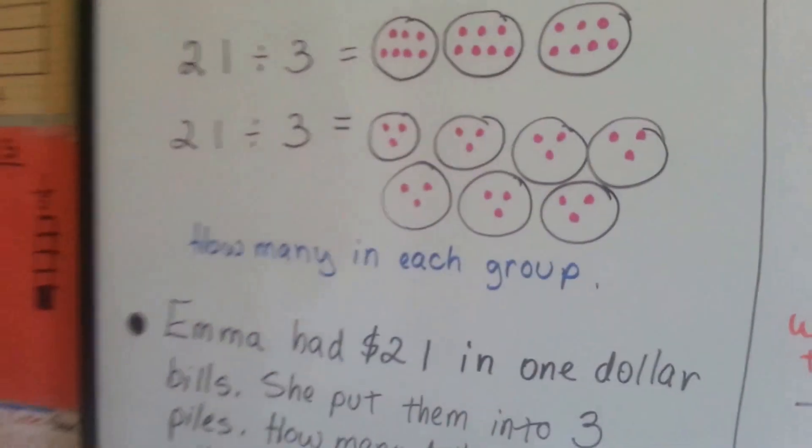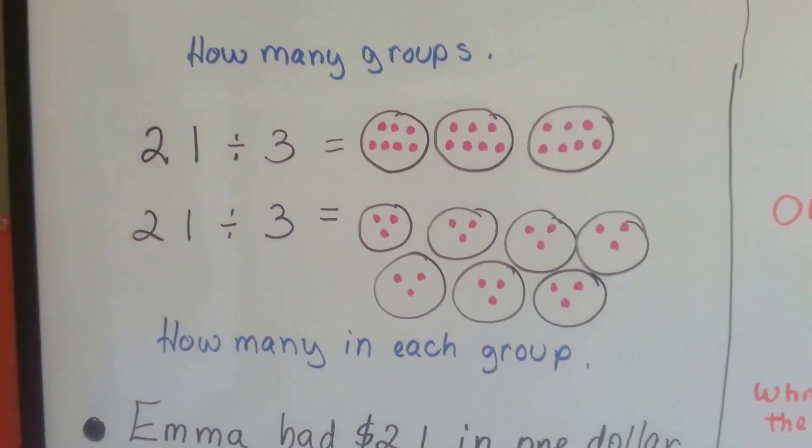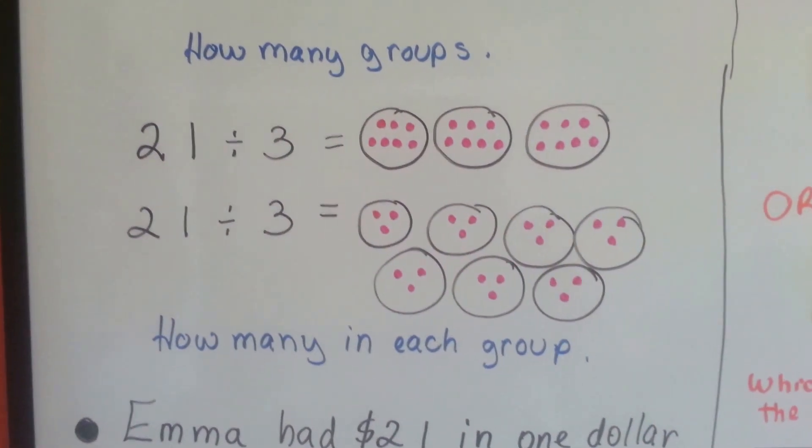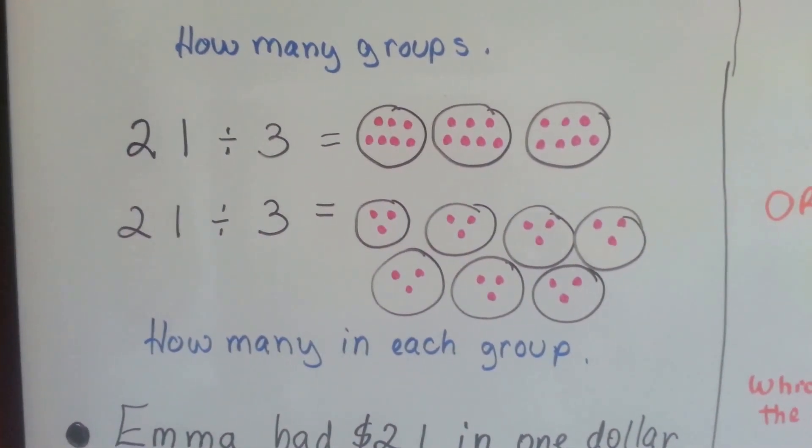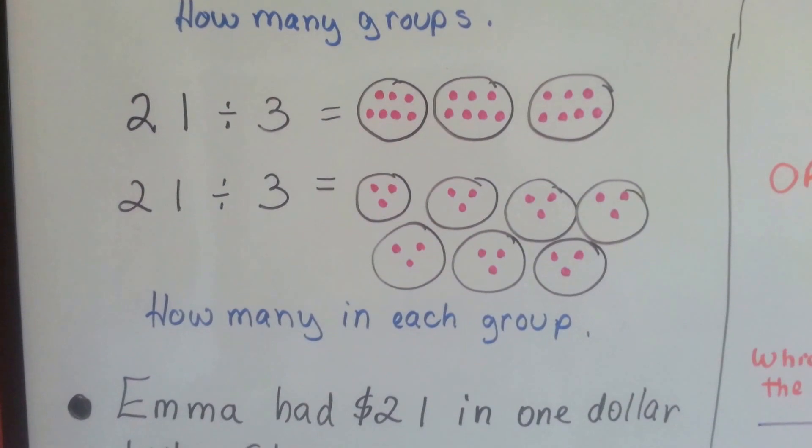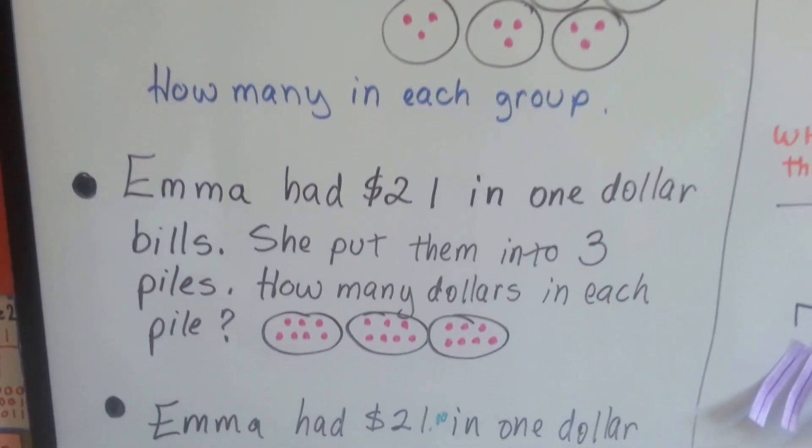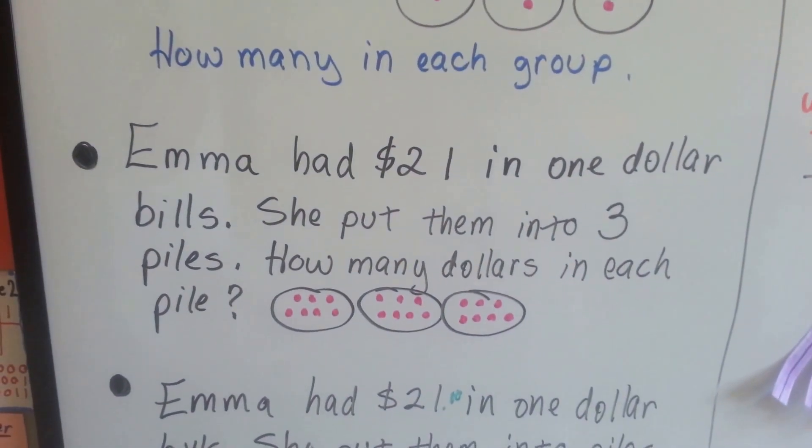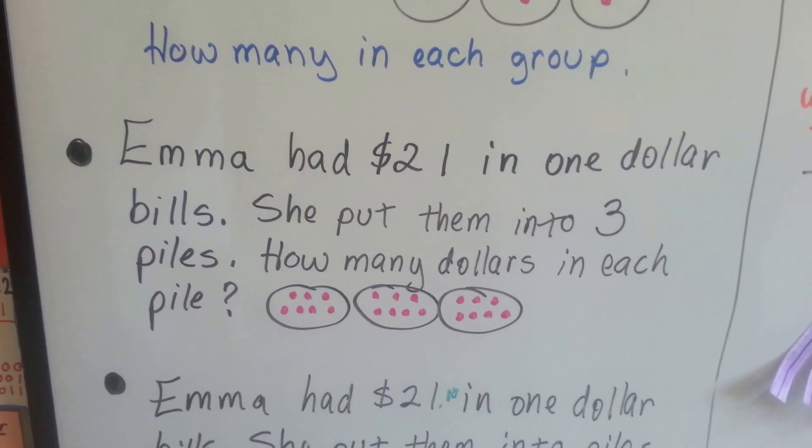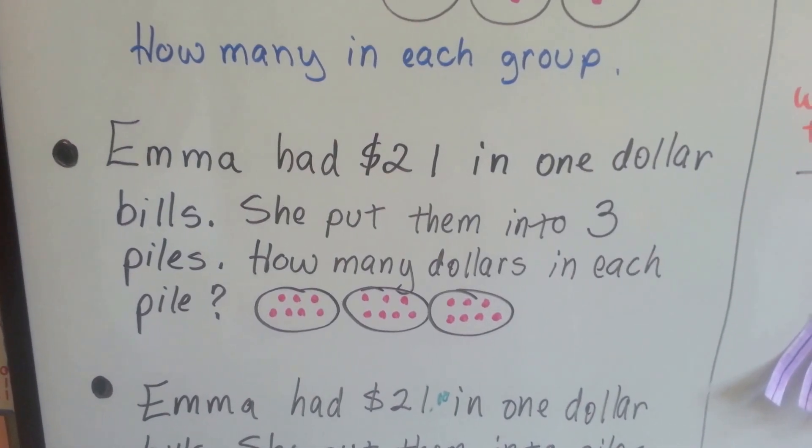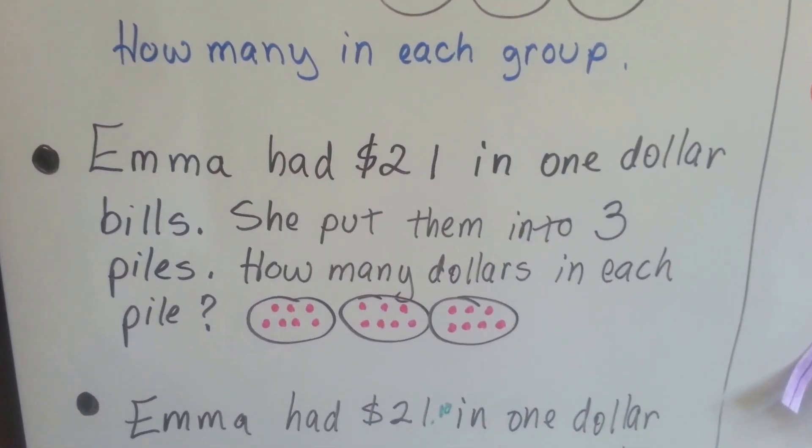It's very important with decimals. Take a look at this. Do we have how many groups or how many in each group? 21 divided by 3. Is it three groups with seven, or is it seven groups with three? Emma had $21 in $1 bills. She put them into three piles. How many dollars are in each pile?